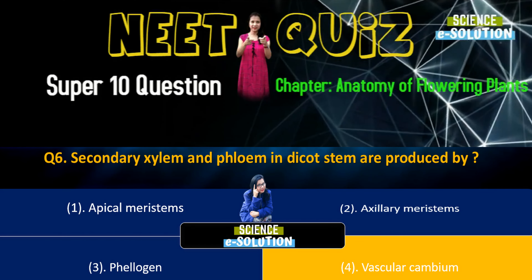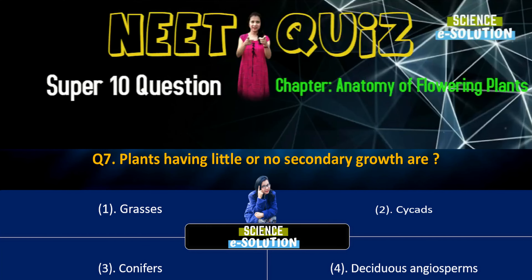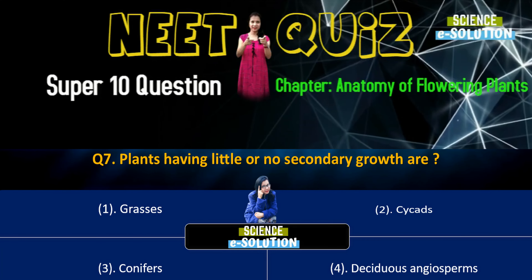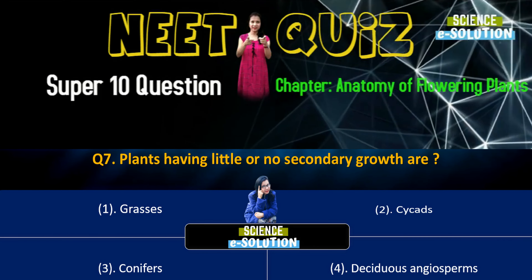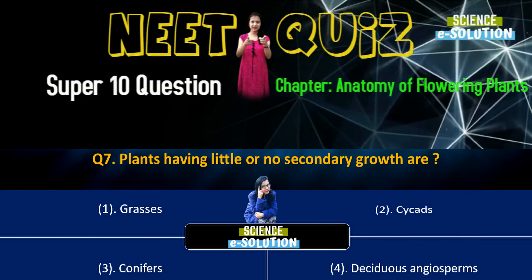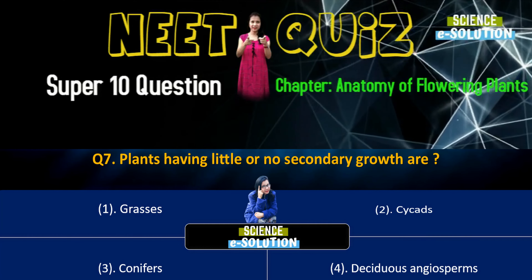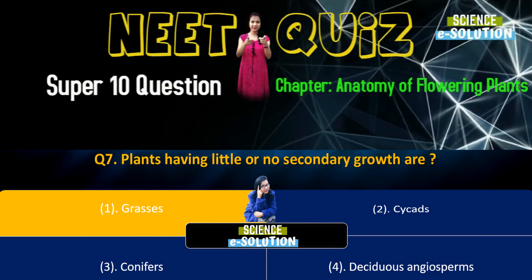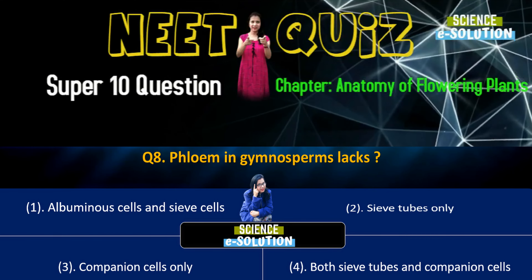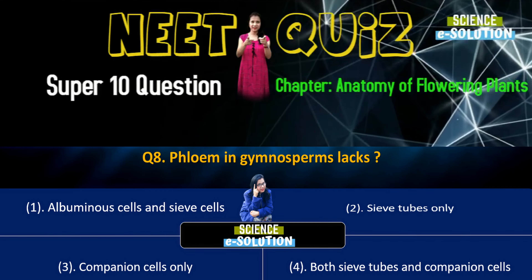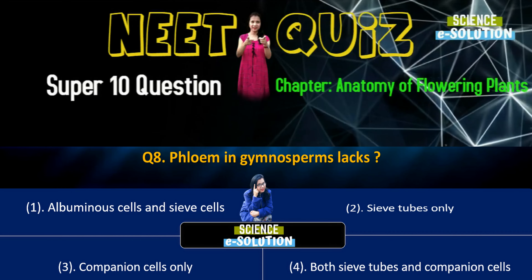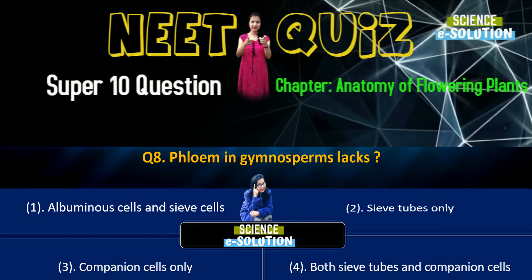Question number four: Identify the wrong statement in context of heartwood. Options include: heartwood gives mechanical support and minerals efficiently; it comprises dead elements with highly lignified walls; or organic compounds are deposited in it. The wrong statement is that heartwood gives mechanical support and does not conduct water and minerals. So option number two.